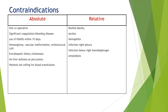Relative contraindications include: morbid obesity where the needle may not reach the liver tissue properly; a liver floating in ascites — in this case, tap the fluid first and then proceed; hemophilia — correct it and then proceed; infection of the right pleura such as empyema or sub-diaphragmatic abscess — avoid that area. Amyloidosis is also a relative contraindication, as amyloid deposited in vessel walls may cause bleeding if a vessel is inadvertently punctured.